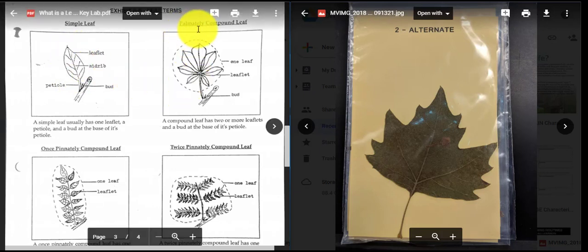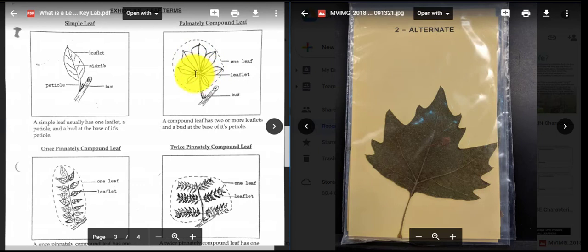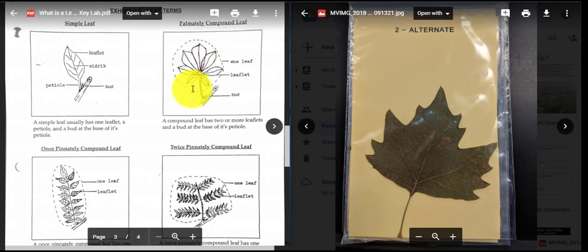Here we have what's called a palmately compound leaf. A compound leaf has many leaflets, two or more leaflets. So if we take a look here, we have one, two, three, four, five, six, seven leaflets all joined in the middle. Now I always remember palmately as like this looks like a hand and the leaves are joined at the palm, much like how your fingers kind of look like they connect at the palm, and then each leaf is like a finger. So this is your palmately compound leaf.